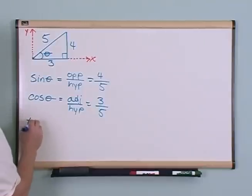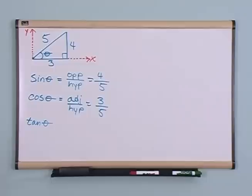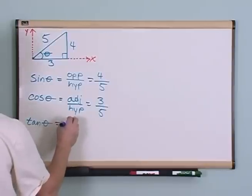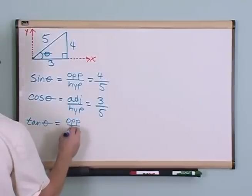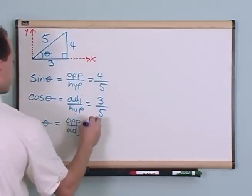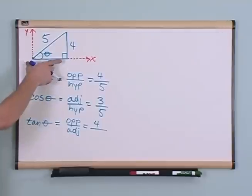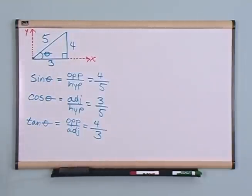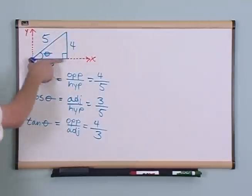The tangent of theta was equal to opposite over adjacent, so opposite over adjacent. Opposite was 4, adjacent was 3, so you get four-thirds. This over this.